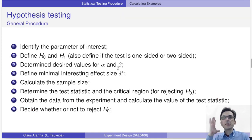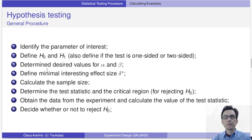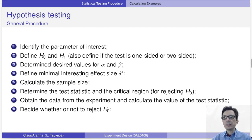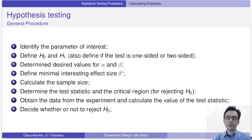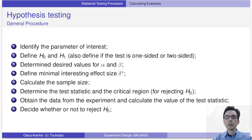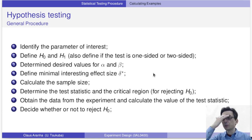Now that we understand how to interpret the result of the hypothesis test, let's review the steps to conduct the test. First, identify the parameters you are trying to estimate, such as the mean. Then define two hypotheses and the desired alpha and beta values. Next, define the minimum size of interest delta. Using these parameters, calculate the sample size. With all these values decided, calculate the statistic for the test and the critical region. After that, obtain the data from the experiment, calculate the test statistic, and decide whether to reject the null hypothesis.